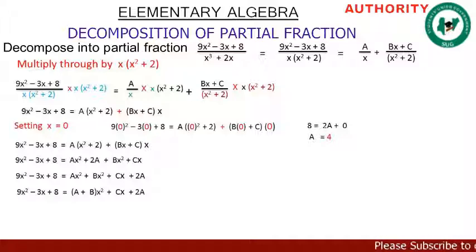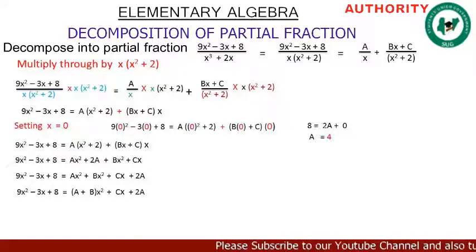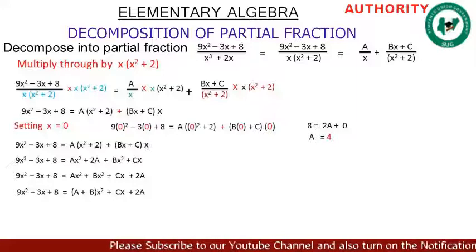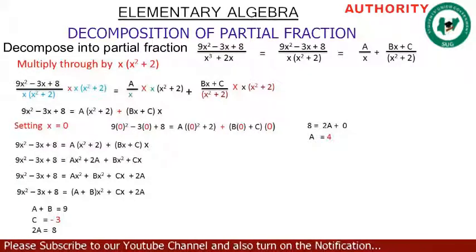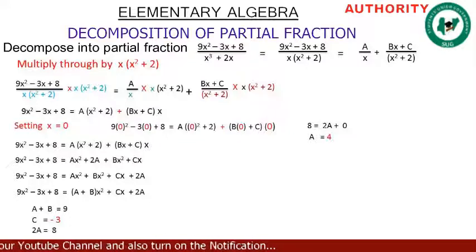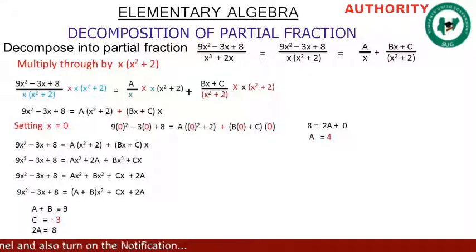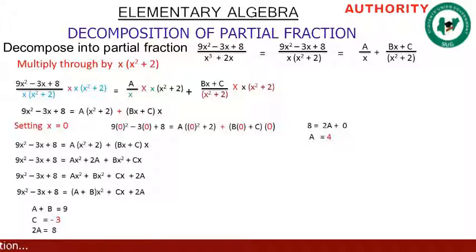Comparing coefficients of x²: the left side has 9 and the right side has (A + B), so A + B = 9. Comparing coefficients of x: the left side has -3 and the right side has C, so C = -3.